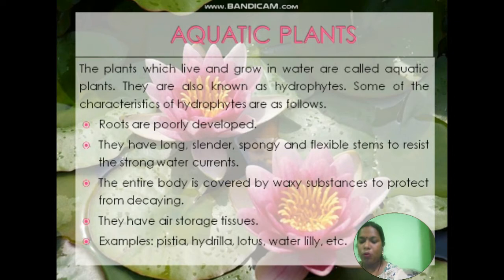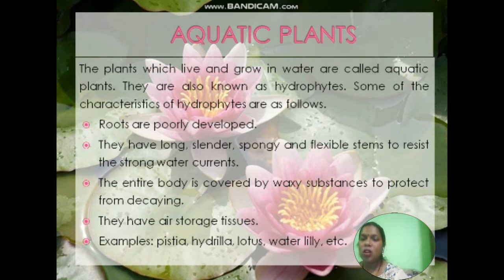Roots are poorly developed. They have long, cylindrical, spongy, and flexible stems to resist the water current. The entire body is covered by a waxy substance to protect from decaying. They have air storage tissues. Examples include Pistia, Hydrilla, lotus, and water lily.